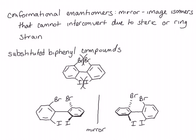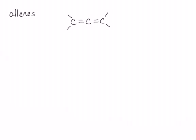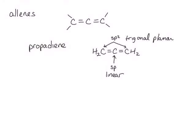These molecules have no chiral centers but they are chiral. Another class of molecules that do not contain chiral centers but are still chiral are called allenes. Allenes are compounds that contain two carbon-carbon double bonds one after another. The simplest example of an allene is propadiene. The carbon in the middle is sp-hybridized, leaving two unhybridized p-orbitals for the two pi bonds. This carbon is linear. The carbons on either end are sp2-hybridized and are trigonal planar. The two unhybridized p-orbitals of the center carbon must be perpendicular to one another.